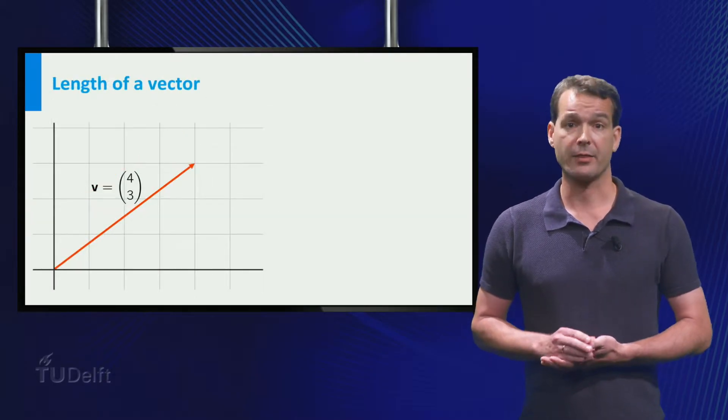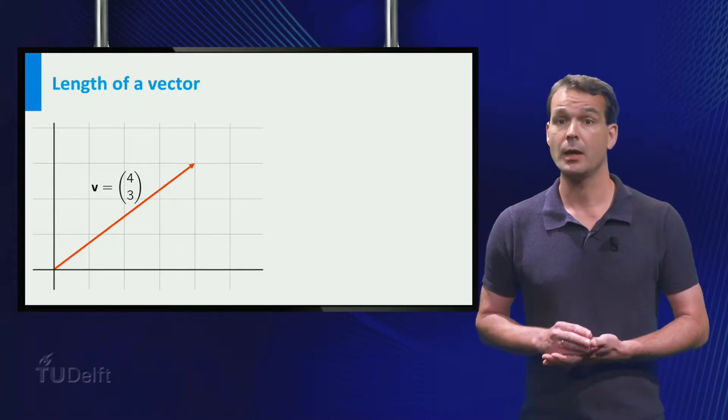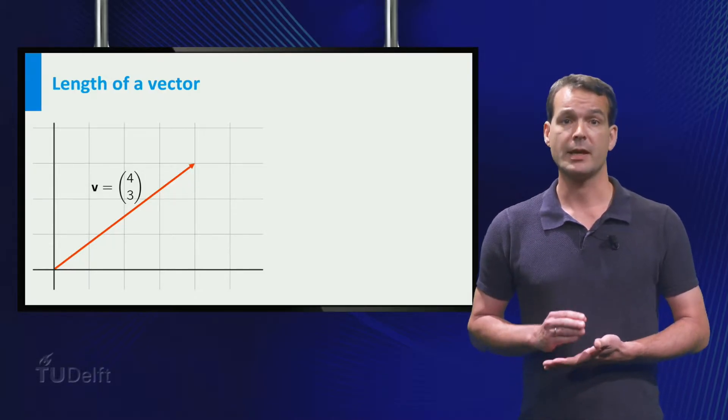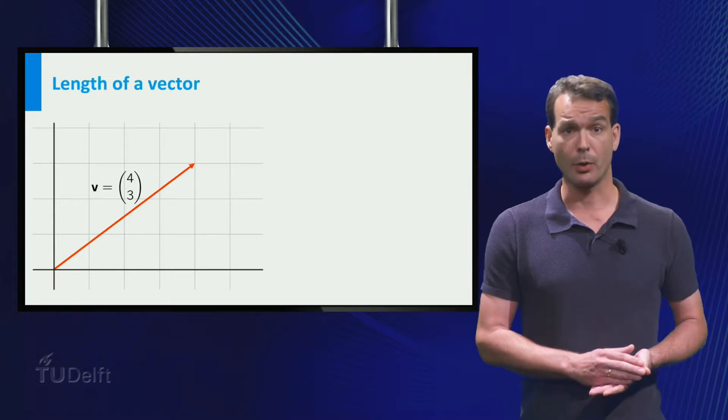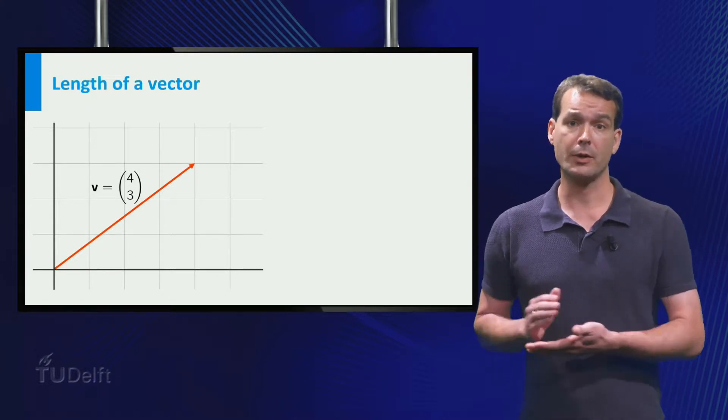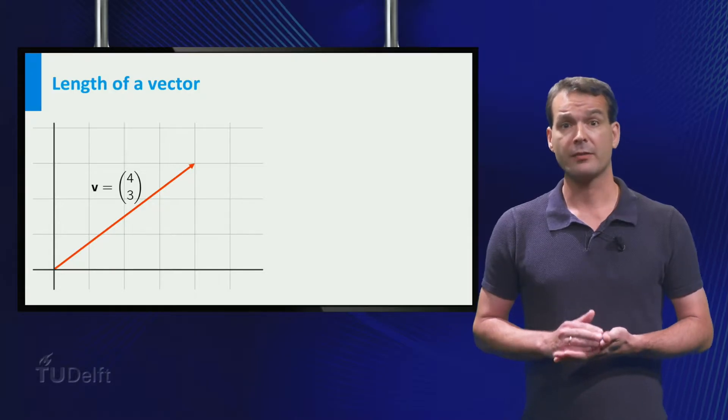What about the length of a vector? The length of a vector, which is also called the norm, is the distance between the starting point and the end point. You can calculate this with the Pythagorean theorem.